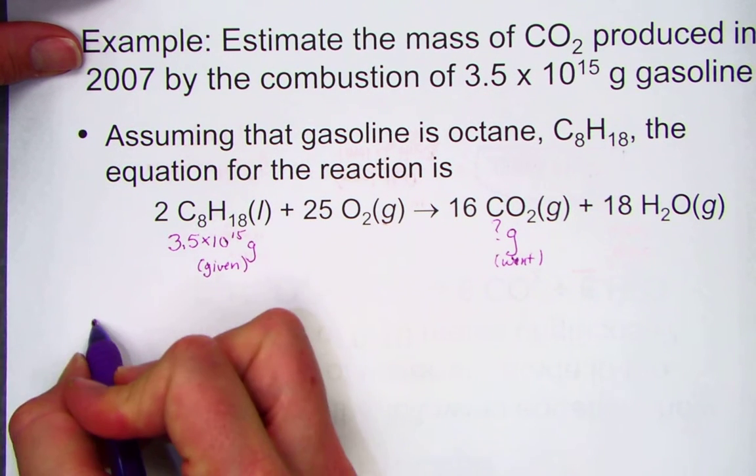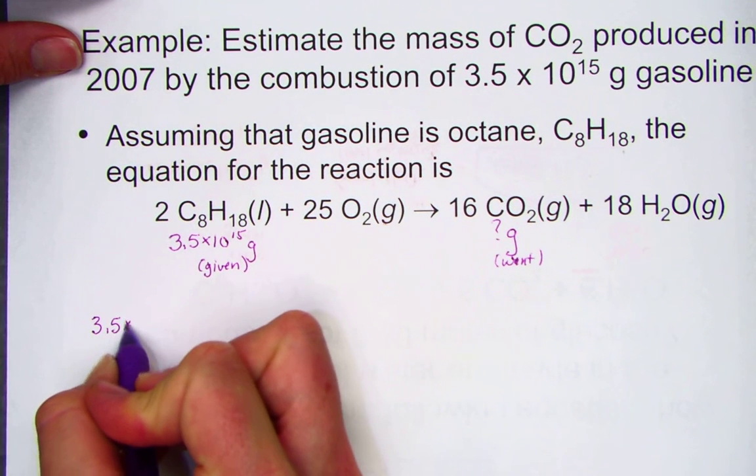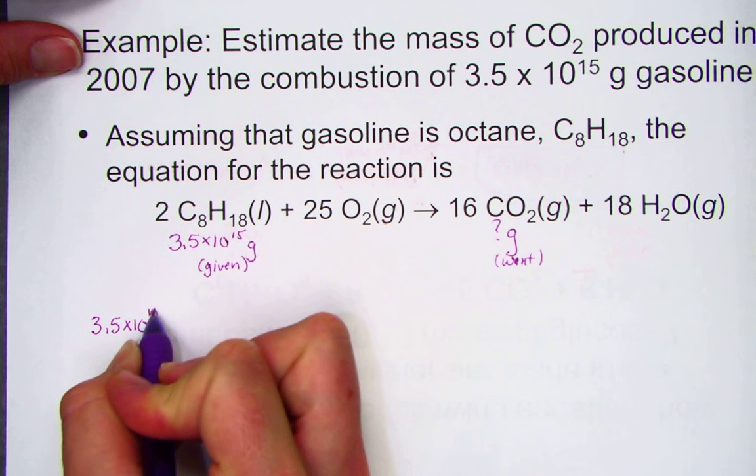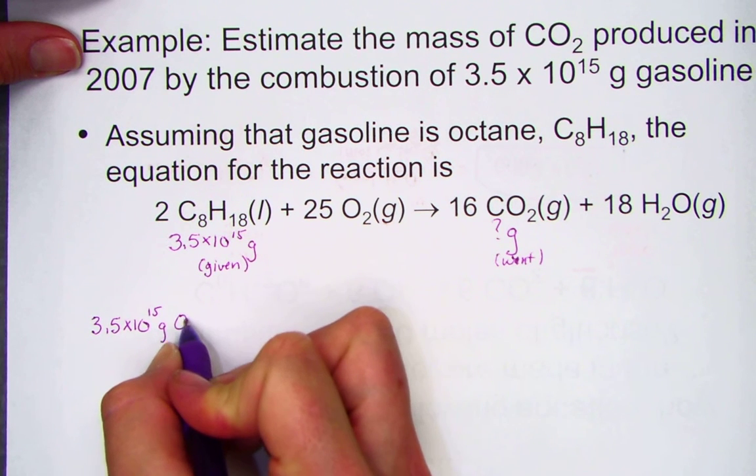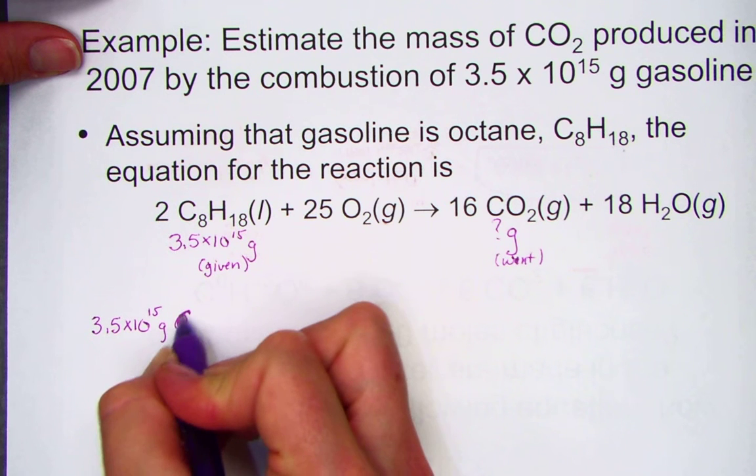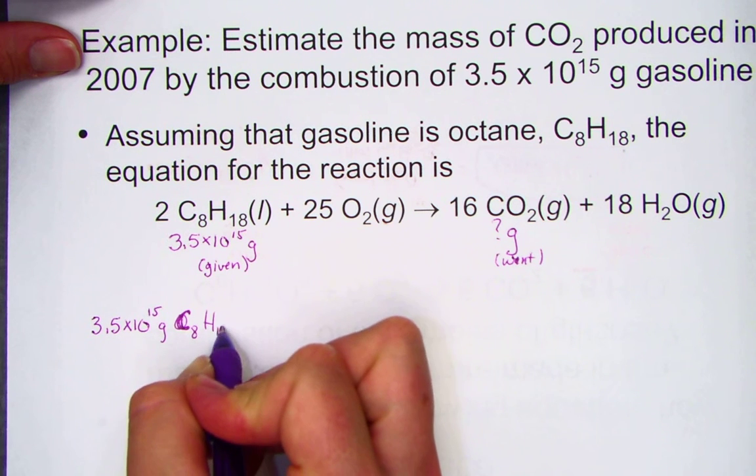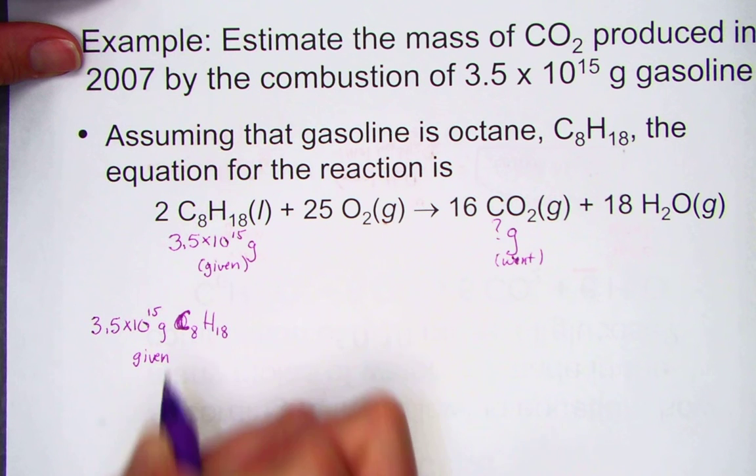And as usual, we'll begin our journey by writing down the number, 3.5 times 10 to the 15th. The unit was grams, and the label was C8H18. This number was the given.